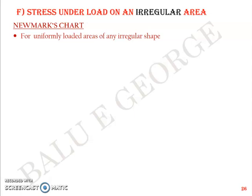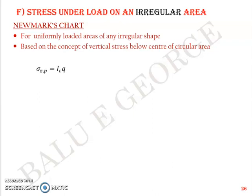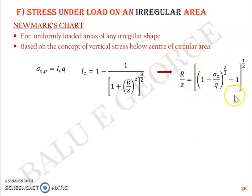The basis of this lies in the concept of vertical stress below the center of a circular area. We have already discussed defining σzp as ic·q. That's the base, and we extrapolate that to fit any shape. From this equation, ic is defined as 1 minus [1/(1+(r/z)²)]^(3/2). Rearranging that equation, you can get r/z in this format, which can be applied to Newmark's chart.